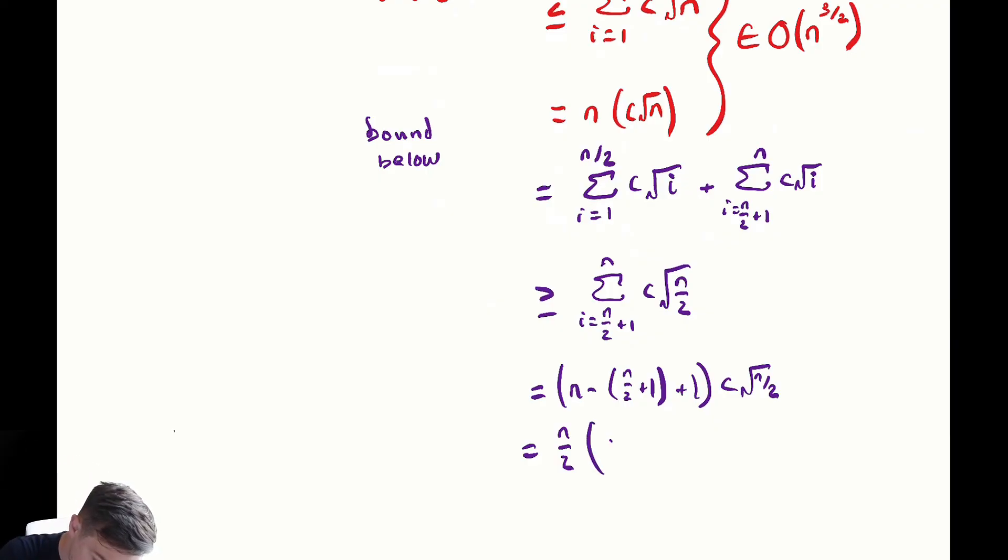So we have n over two times c radical n over two and our constant here is uglier but all of this stuff here in purple says that it is in omega of n to the three halves. So that summation is in big O of n to the three halves it is in big omega of n to the three halves therefore it must be in big theta of n to the three halves.